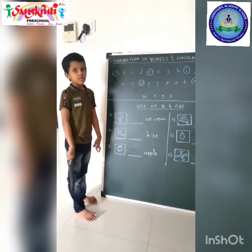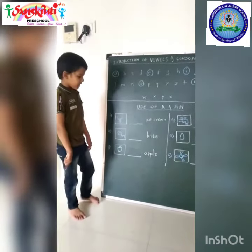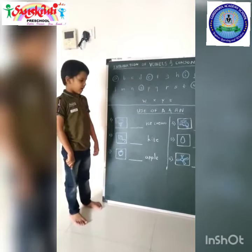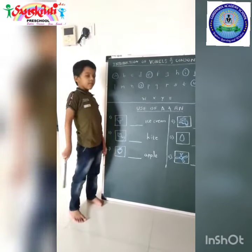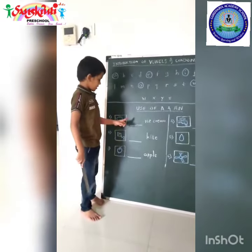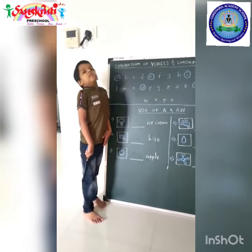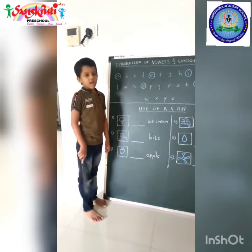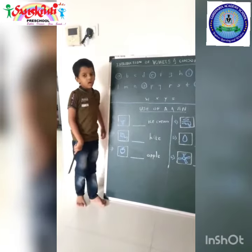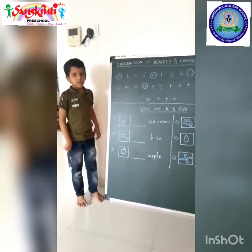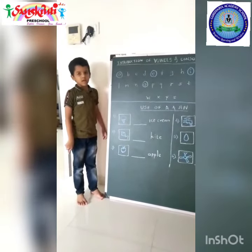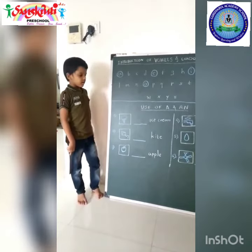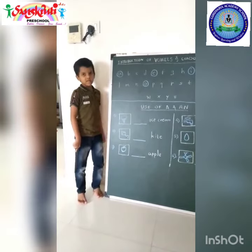All consonants के सामने 'a' का use होता है, और vowels के सामने 'an' का use होता है। मैं फिर से एक बार बताऊंगा: O, S के सामने 'an' और consonants के सामने 'a' का use होता है।